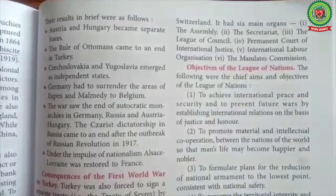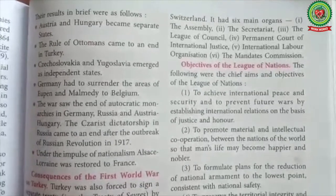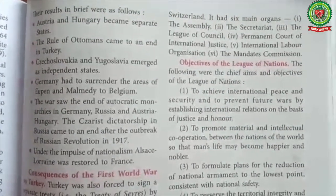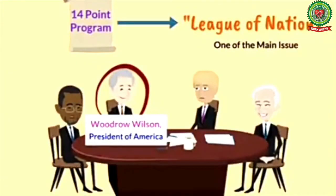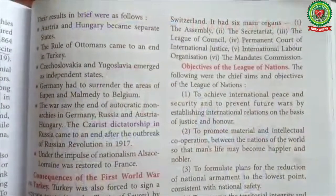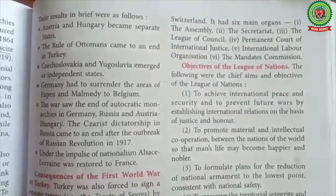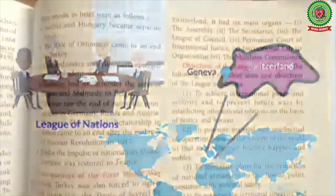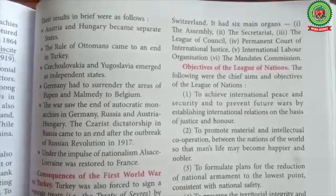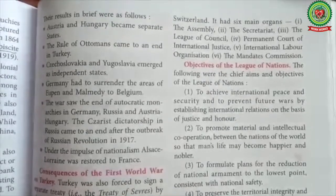In 1919, the victors — principally the UK, France, the USA, and Italy — met at Versailles in Paris to hammer out a peace agreement. The American President Woodrow Wilson suggested a blueprint for the post-war world called his 14 Points. One of his key points was the setting up of the League of Nations, established on January 10, 1920, with its headquarters at Geneva in Switzerland.